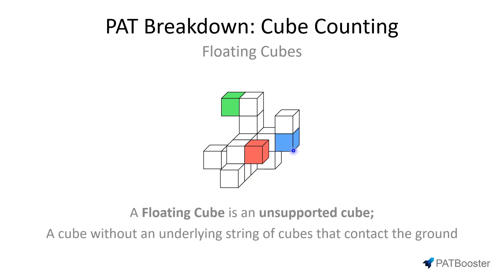The blue cube is a little trickier but still easy, because now there are two faces touching other cubes. Honestly, it doesn't really matter how many faces are touching — the important thing is that it is unsupported, meaning it has no cube underneath that is touching the ground. The green cube looks like the red cube, but some students get confused because there's a cube underneath it that is touching the ground. However, our definition says a floating cube is without a string of cubes contacting the ground, so with a gap present, the green cube is undoubtedly unsupported and is therefore a floating cube.